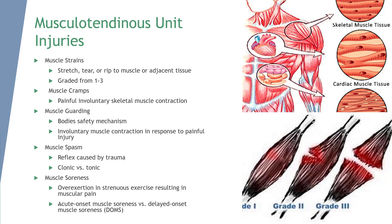Musculotendinous unit injuries. Muscle is composed of contractile cells that produce movement. Musculotendinous units are irritable, conductive, and elastic. Skeletal muscle has three types: cardiac, smooth, and striated.